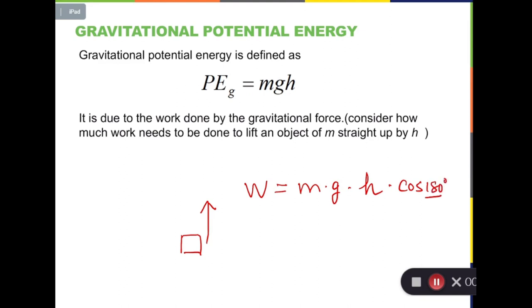The reason for 180 degrees is because gravity is downward, but this displacement of the box is upward. So they are opposite. That's why we have 180 degrees, and this gives us a negative work.